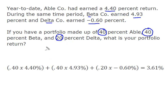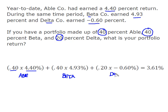Now I'm simply going to take the percentage that I hold times the return. This one right here was my investment in Able — that was my forty percent at 4.40. I had forty percent in Beta, and that's what this represents here. The third stock in my portfolio was Delta, which I held twenty percent of, and that was my loser at 0.60%.